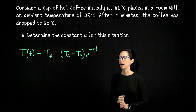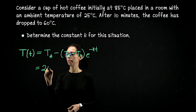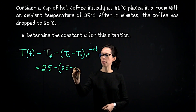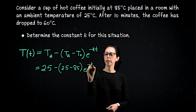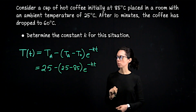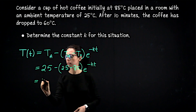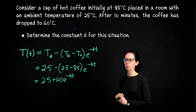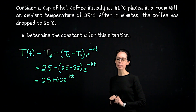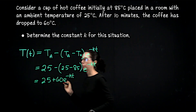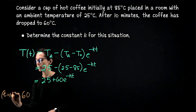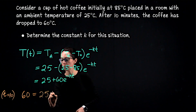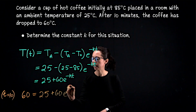With a cup of coffee at 85°C in a 25°C kitchen, after 10 minutes the temperature has dropped to 60°C. Using our solution T(t) = T_a − (T_a − T₀)·e^(−kt), we plug in T_a = 25 and T₀ = 85 to get T(t) = 25 + 60·e^(−kt). Now we use the condition T(10) = 60: plugging in little t = 10, the temperature after 10 minutes is 60 degrees.